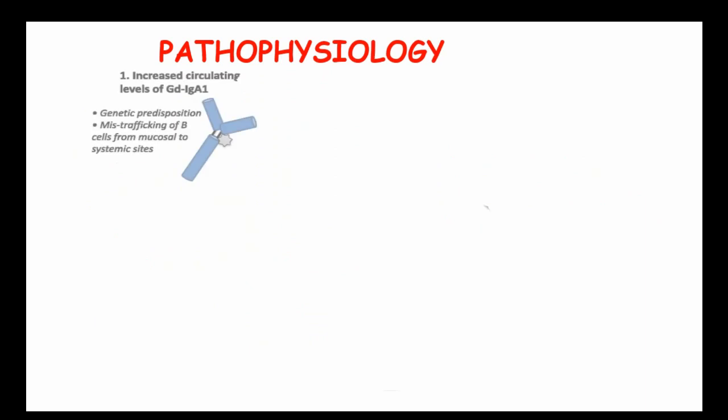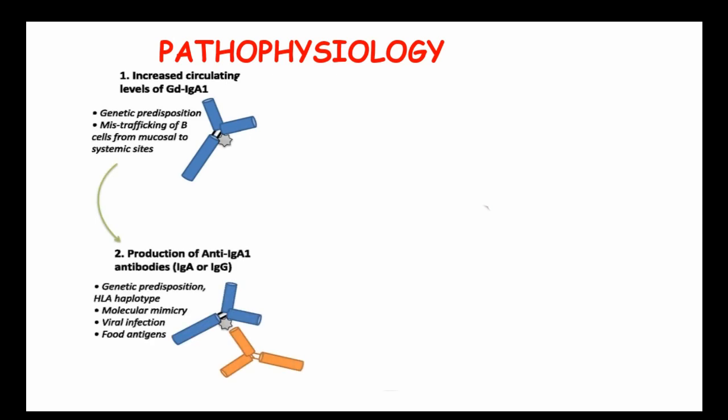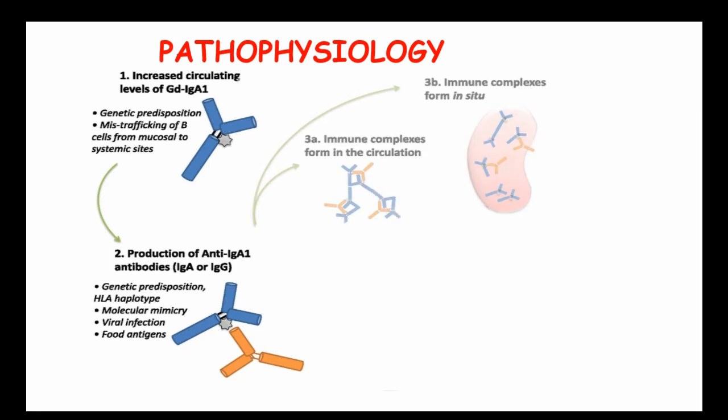In terms of pathophysiology, it all starts from increased circulating levels of galactose-deficient immunoglobulin A1 because of genetic predisposition, and mistrafficking of B cells from the mucosal to the systemic sites. This leads to an increased production of anti-IgA1 antibodies because of genetic predisposition of HLA haplotype, molecular mimicry, viral infection, and food antigens. All of this leads to immune complex formation in the circulation and immune complexes in situ.